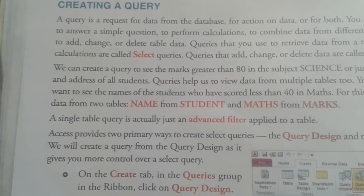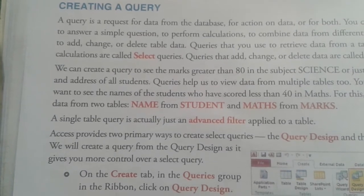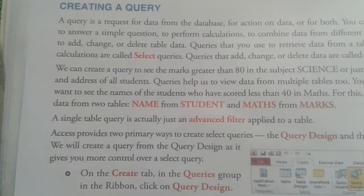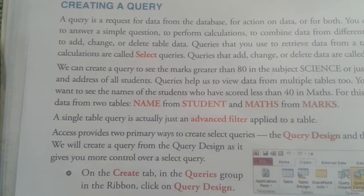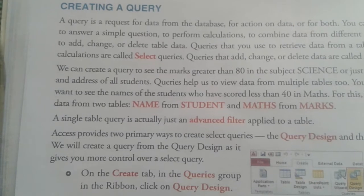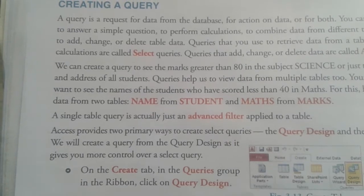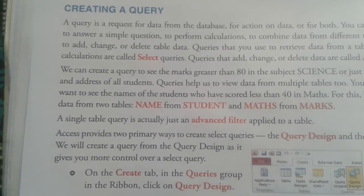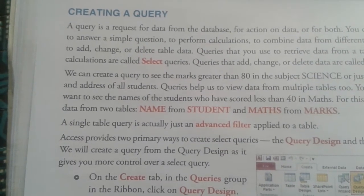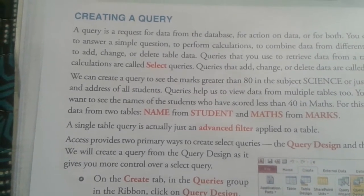Field: it displays the name of the field included in the query. Fields are those things which denote a group of common names. Table: it displays the name of the table of the above field. Sort: it is used to sort the above selected field in ascending or descending order. By default, query results are not sorted.